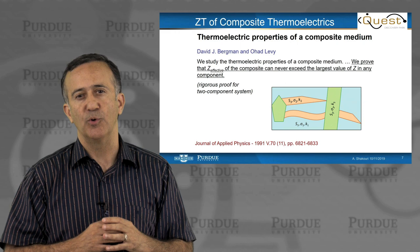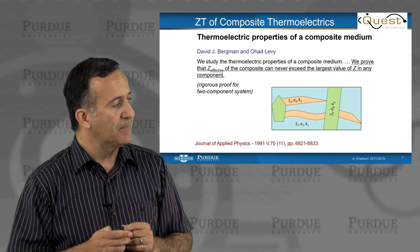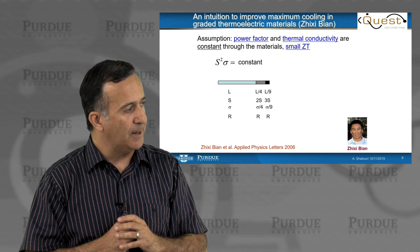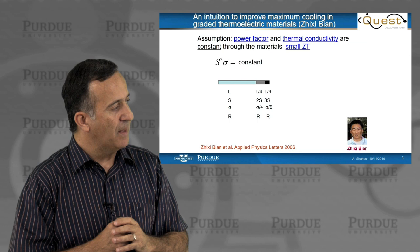But what is interesting is Z does not come in as a fundamental parameter. Z came in when we did the energy balance for, for example, cooling, or we can do the same for power generation. A couple of years ago, Si Shibyan, who was a scientist at UC Santa Cruz, had an interesting idea. And the idea was, well, can we grade the properties of the thermoelectric material to improve the maximum cooling?